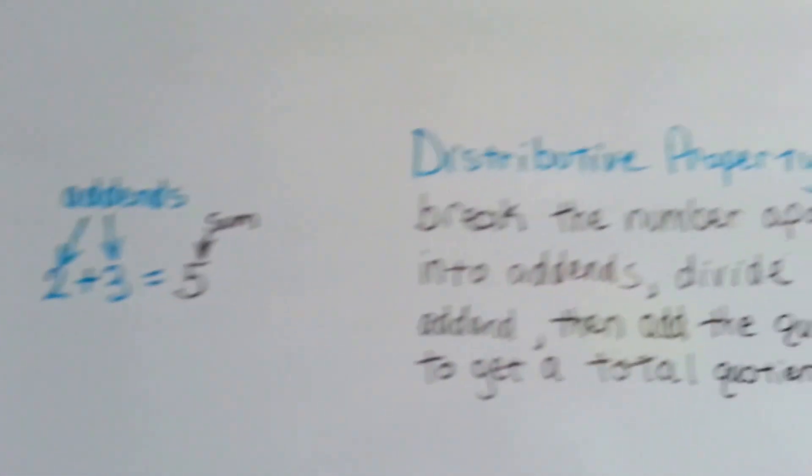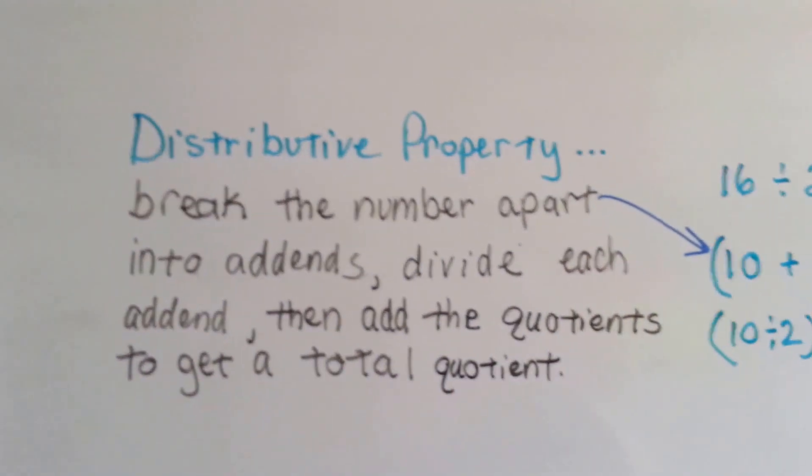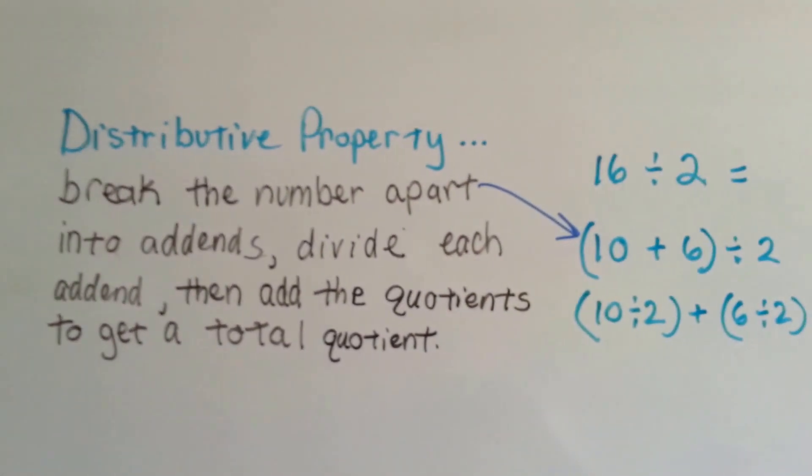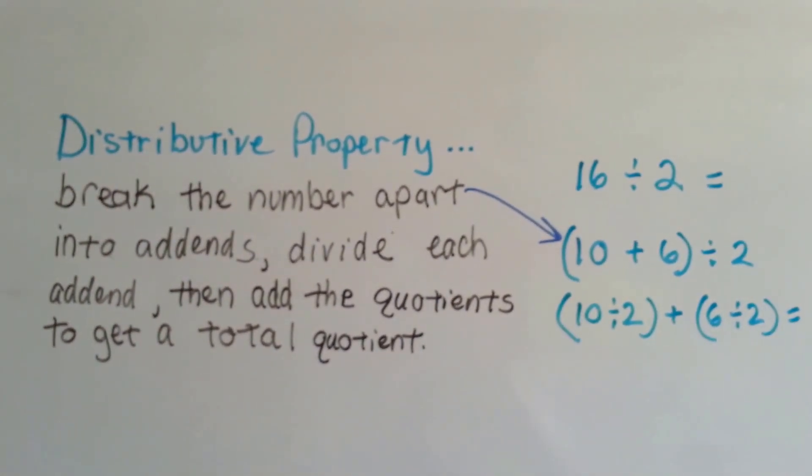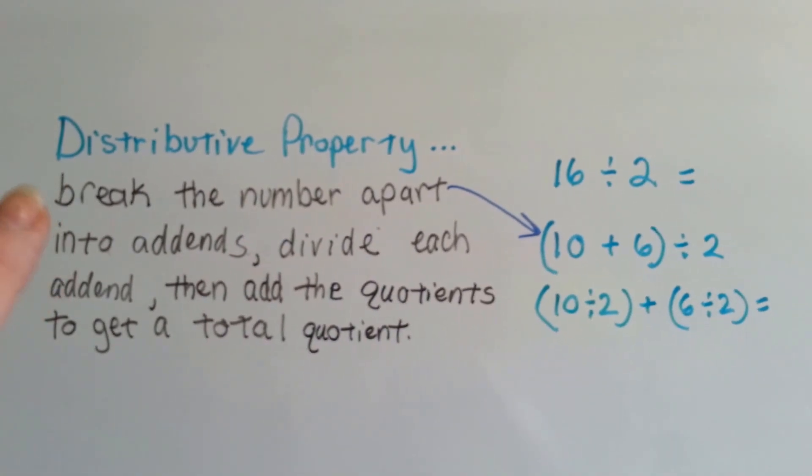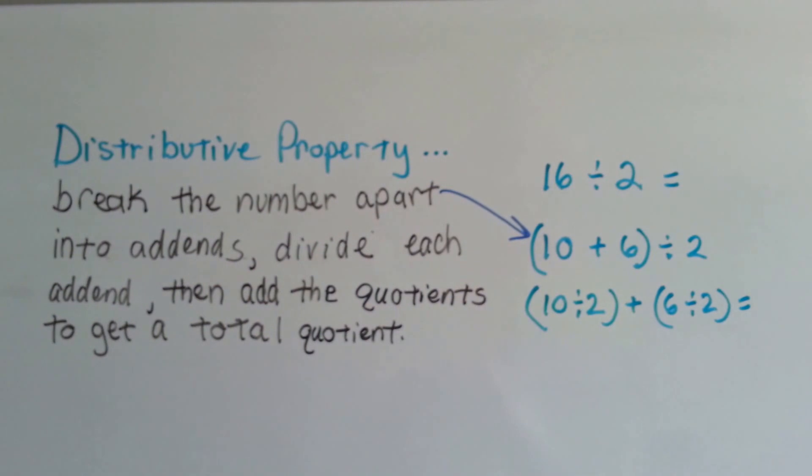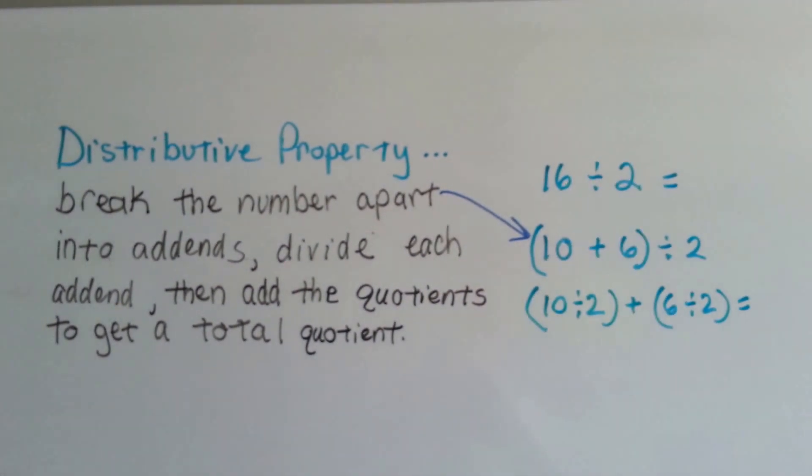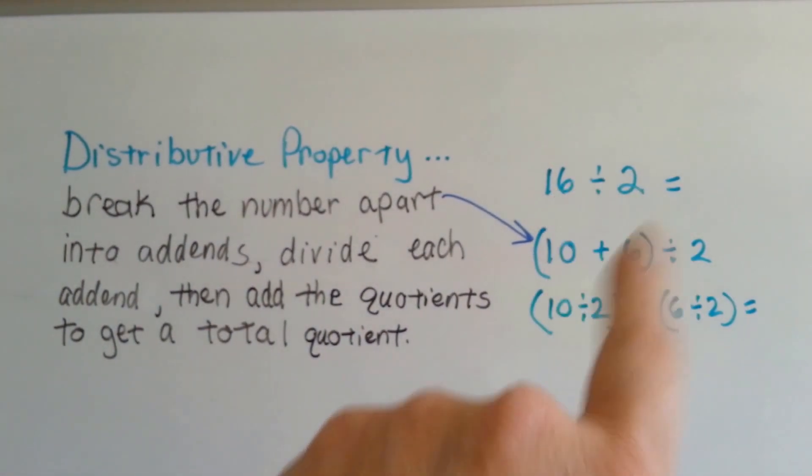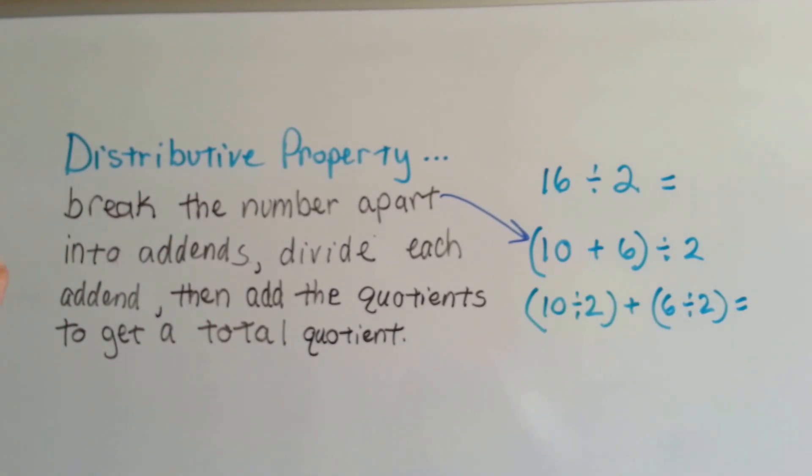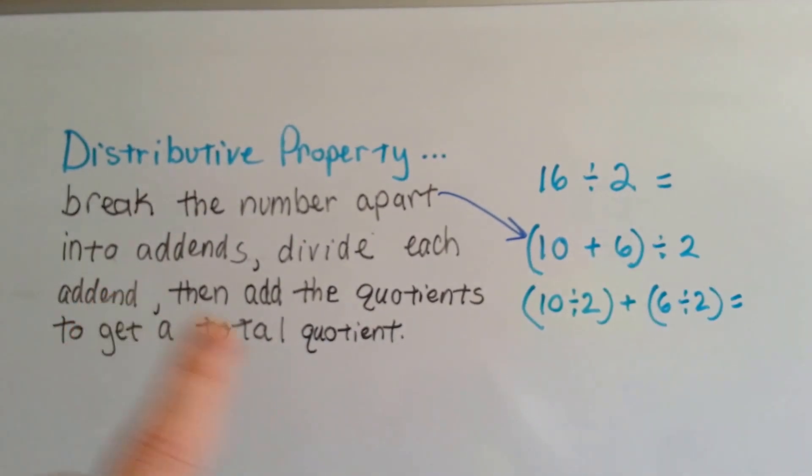I don't know if you remember what the distributive property is, but we've discussed it a couple times for multiplication and addition. The distributive property of division, which is basically the same thing, has division signs in it instead of multiplication signs. We break the number apart into addends.